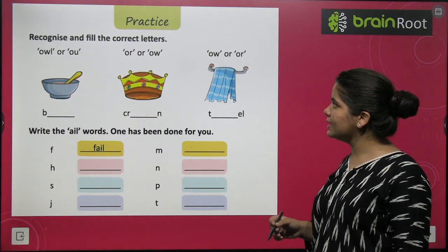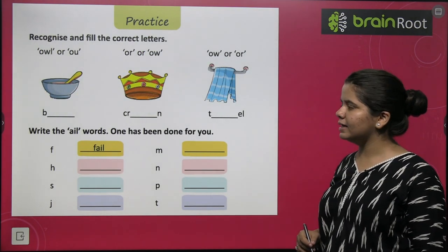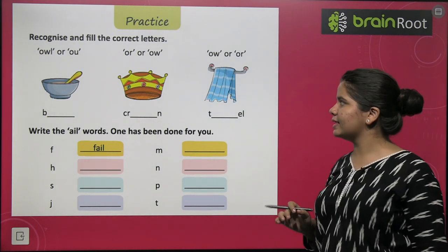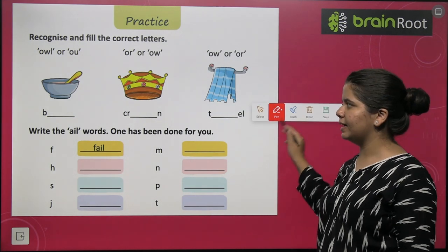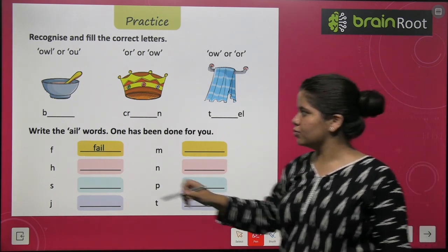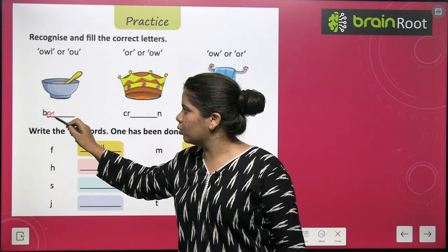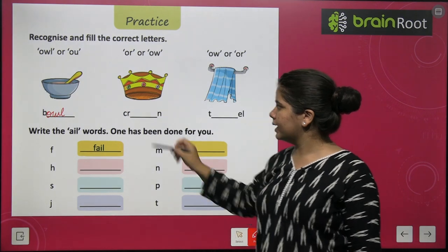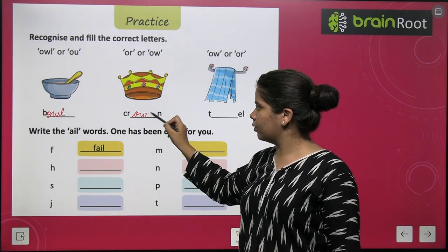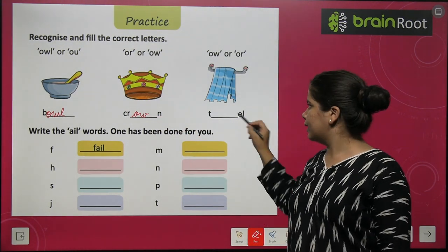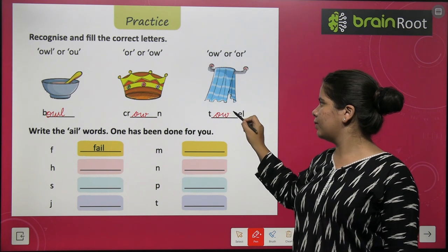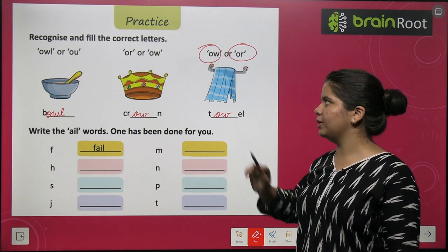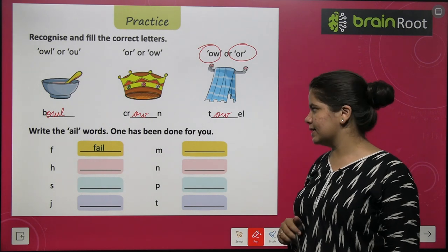Now we have to recognize and fill in the correct letters. First is bowl — B, O, W, L — bowl. Next is crown.